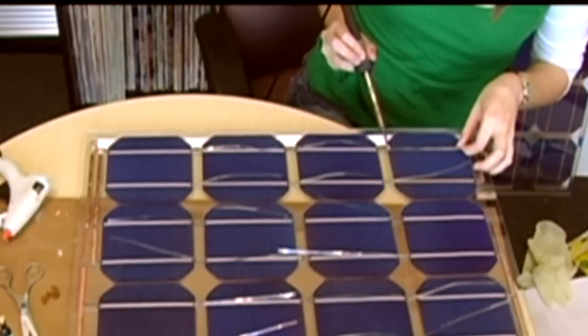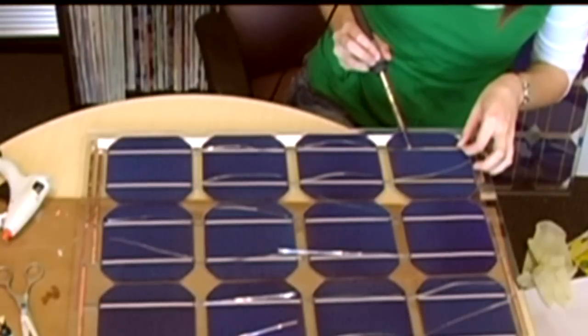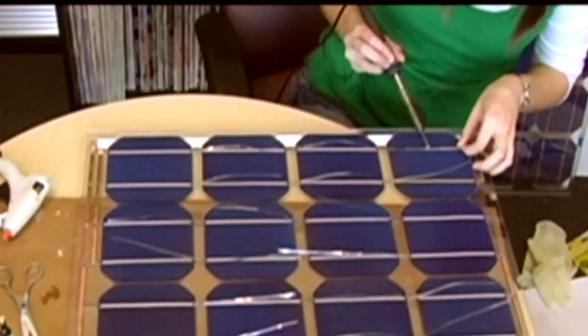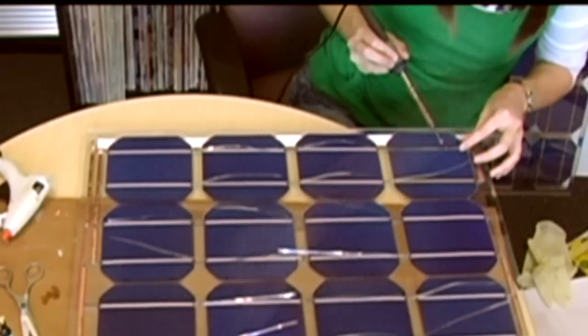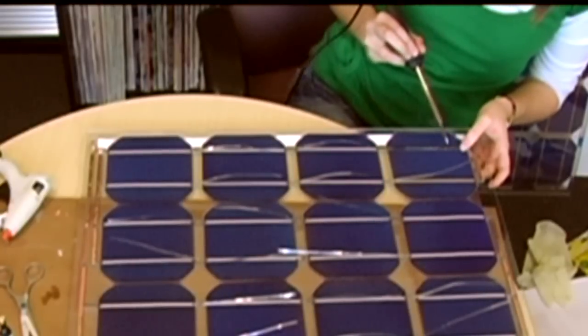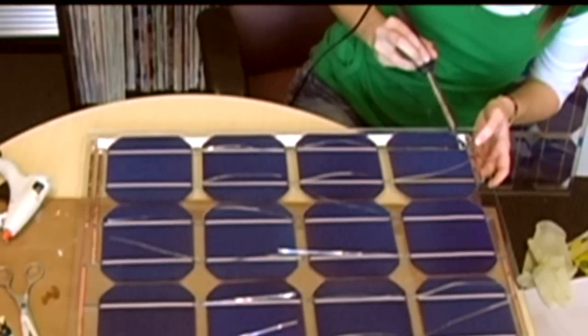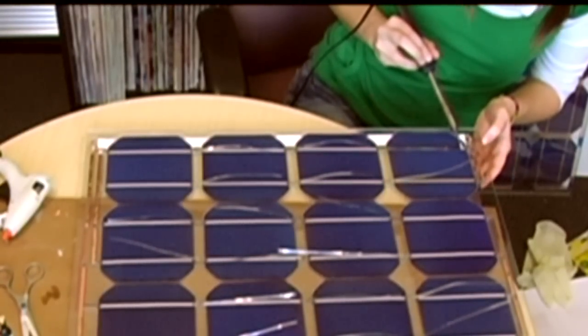Now, just like before, add 3/8ths of an inch of solder to the tip of your iron and gently wipe the iron down the tabbing wire, pulling the tabbing wire taut as you go. Spread the solder about halfway down the cell, apply another 3/8ths of an inch of solder, and spread it down the other half.